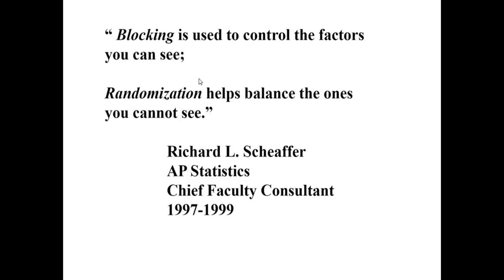Blocking is used to control the factors you can see; randomization helps balance the ones you cannot see. To summarize, in the words of Dick Schaefer, the first chief reader for the AP Statistics exam: block for what you can — any anticipated variability in the response variable — and use randomization to create groups that are as similar as possible to help balance out the effects that you couldn't anticipate.